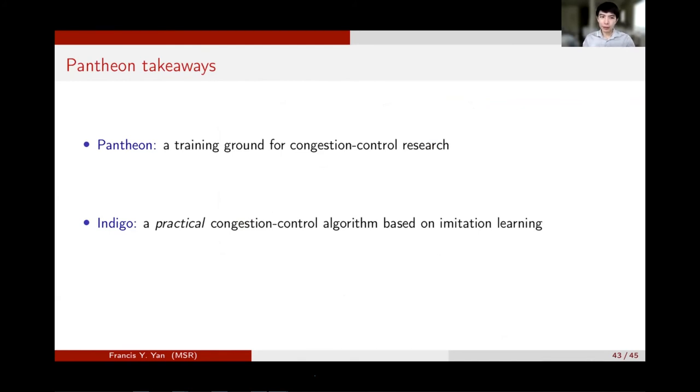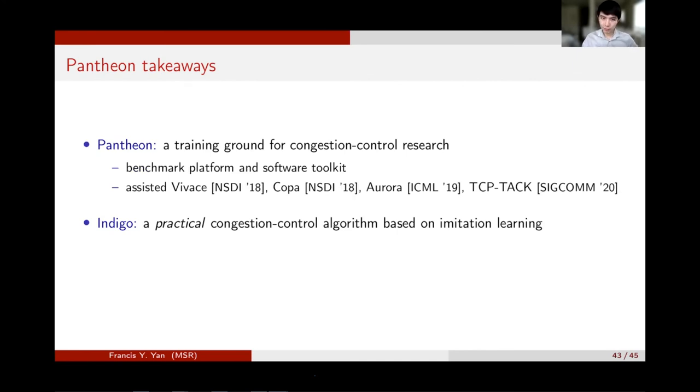So now I'd like to conclude the takeaways from Pantheon. Pantheon is a training ground, a gym, for congestion control algorithms. It measures a set of 15 algorithms continuously on real network paths in 10 countries, and it proves to be useful to the community, helping other algorithms publish at top conferences. It also enabled a novel design of our own. The key insight, the key takeaway, is that we can create congestion control experts for simulated networks based on BDP. Then we just train an algorithm, train Indigo, to mimic experts' behaviors. Since the experts only exist in simulation, we have to explicitly deal with the sim-to-real gap to achieve generalizable performance in practice. That's why we created calibrated simulators, which boosted Indigo's performance in real life. So any questions about Indigo?